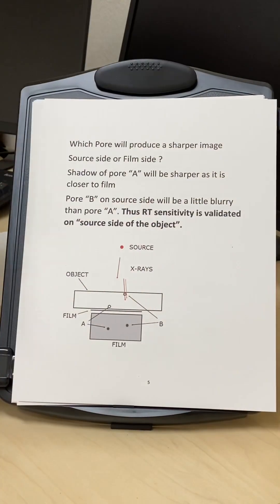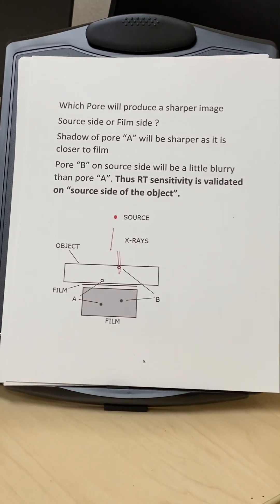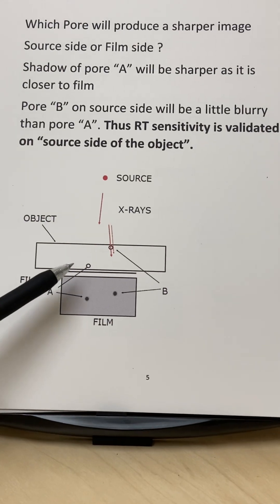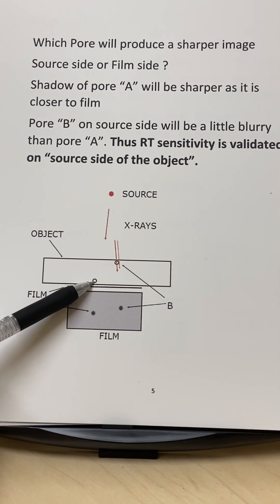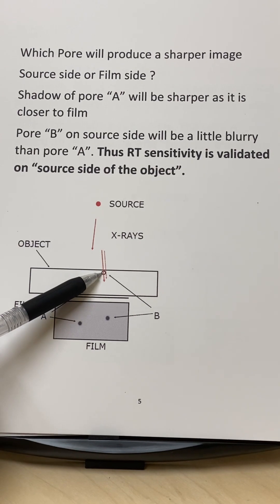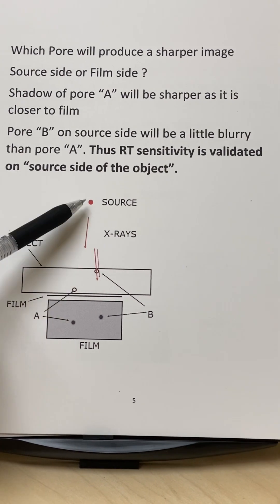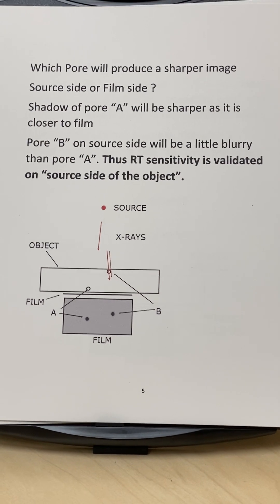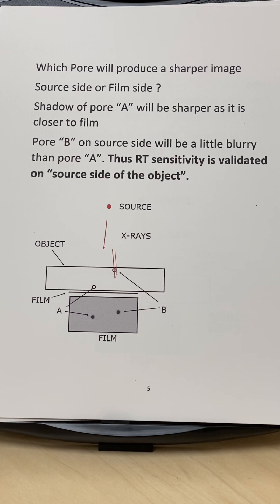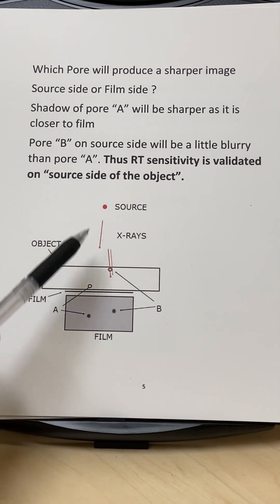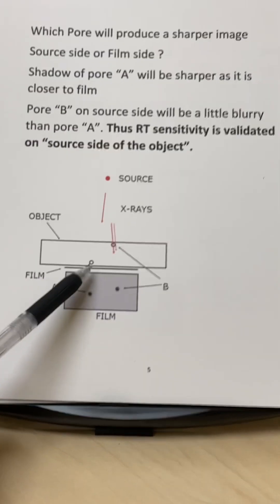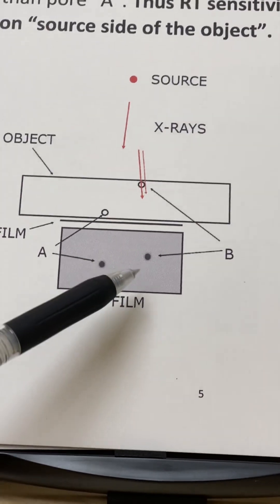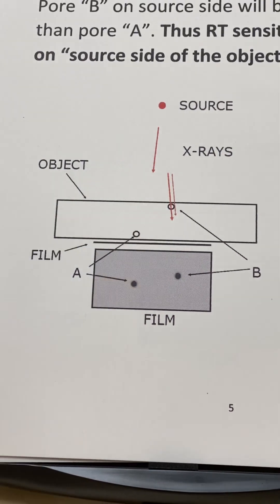Here is another example: consider two pores during radiography. Pore A is closer to the film, and pore B is away from the film and closer to the source. The question is which pore will produce a sharper image. Pore A, being closer to the film, will produce a sharper image than pore B, which is on the source side.